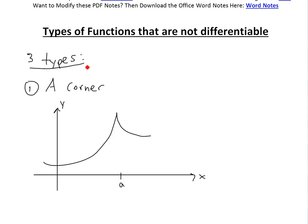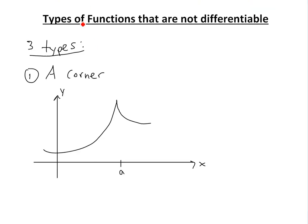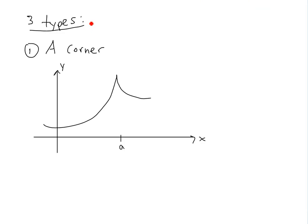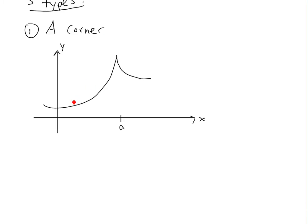Now basically there are three types of functions that are not differentiable, and the first I'm going to look at is a corner or a kink. So if you have something like this and there's a sharp turn, a sharp corner like this one right here.